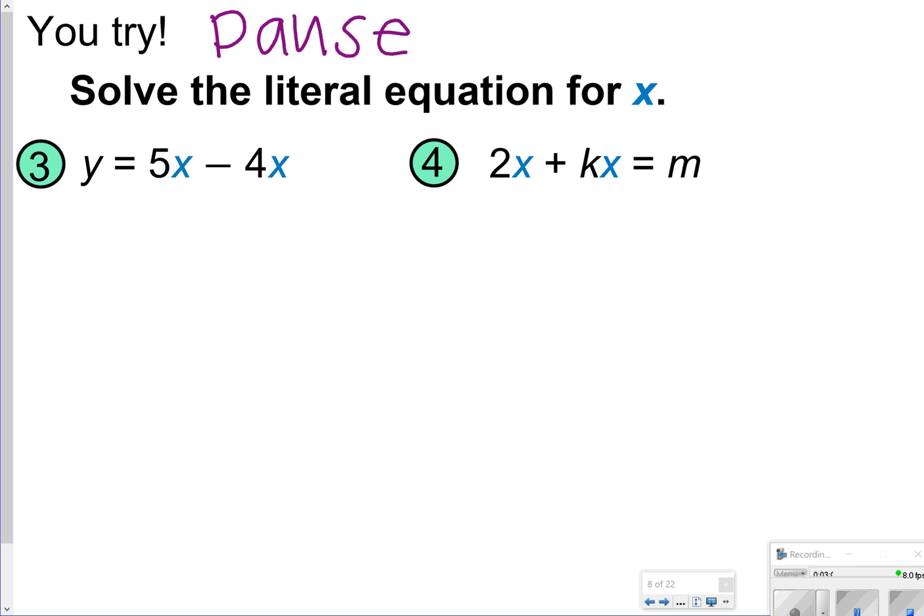Alright, so we have number 3, 5x minus 4x equals y. We can actually combine these like terms. 5x minus 4x is 1x. And 1x is just equal to x. So that one with number 3 is actually pretty simple. x is equal to y.